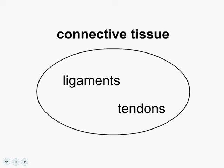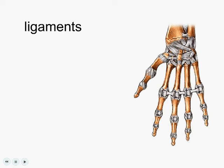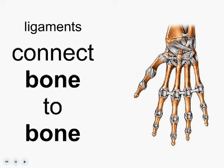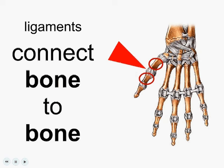What do they connect together? Let's find out. First, we'll start with ligaments. Ligaments, it turns out, help connect bone to bone. Have a look at this picture of a hand. You see that there's bone right here and bone right here in the thumb. What's connecting them together? It's a ligament. Ligaments connect bone to bone.